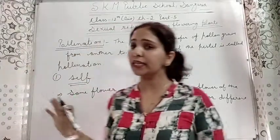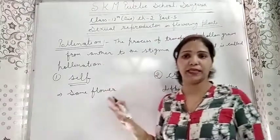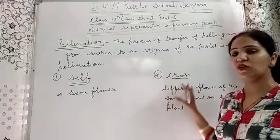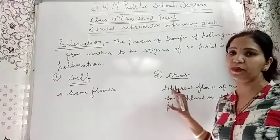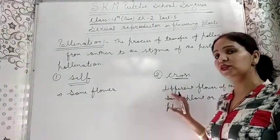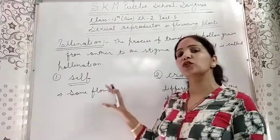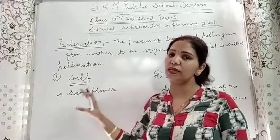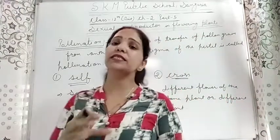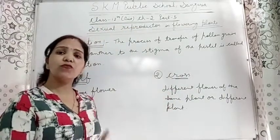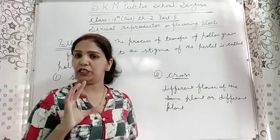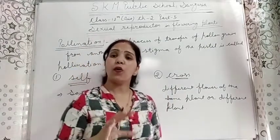To summarize: pollination is the transfer of pollen grain from anther to stigma. These are of two types — self and cross. If the pollen lands on the stigma of the same flower, it is self-pollination. If pollens land on the stigma of another flower of the same plant or a different plant, it is called cross-pollination.